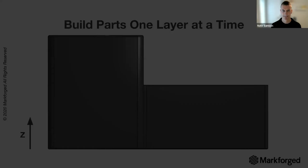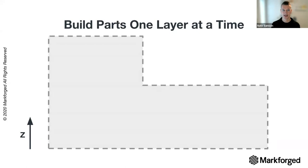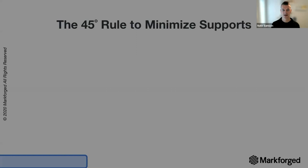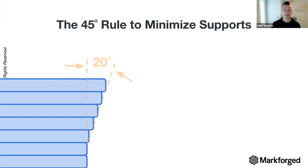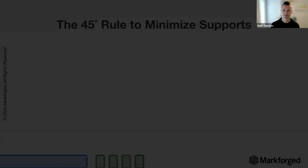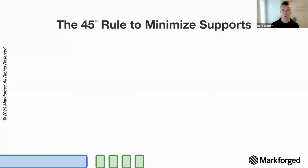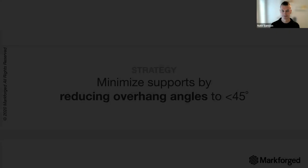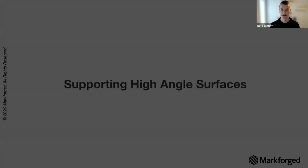Parts are built layer on top of layer. For simple geometry with no overhangs or cantilever features, no supports are needed. The general 45-degree rule: anything less than 45 degrees will be produced without supports — for our Onyx material and 17-4 stainless steel. Some materials have an angle of 50 or 55 degrees, so review the design guide for specifics per material. Once you go past that 45 degrees, supports will be automatically generated, and you can minimize supports by reducing overhangs to less than 45 degrees.